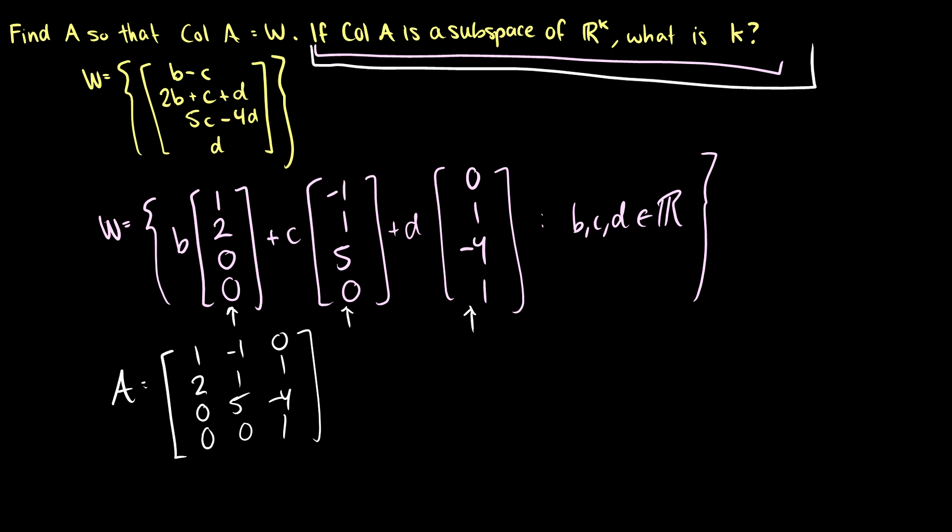So of course, you remember that if the matrix is m by n, so if it's m by n, then the column space is going to be a subspace of R^m. So what is R^m here?